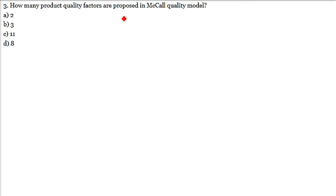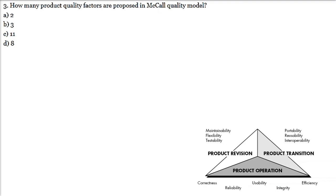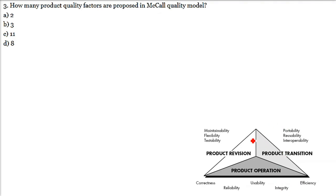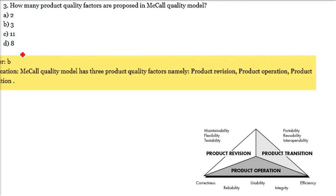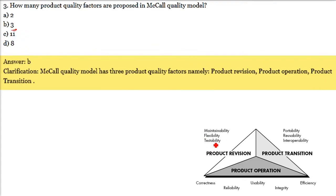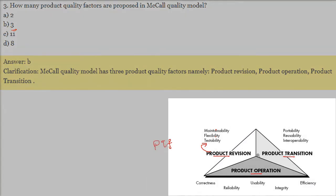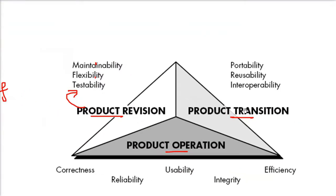How many product quality factors are proposed in the McCall quality model? The McCall quality model has three product quality factors: product revision, product transition, and product operation. You don't have to go into the detail of every part - the basic answer is three.